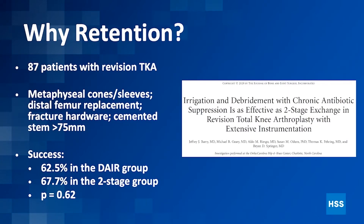So why retention? Looking at 87 patients with revision total knees — patients that already had revision total knees with large stems, large cones, and a lot of hardware — you have options: you can IND it or take everything out. Doing a big tibial tubercle osteotomy and taking these things out can be very detrimental to the bone. You may not have any bone left. Out of North Carolina, 62% were successful in their DARE group and 67% in the two-stage group. So it's a bad problem regardless of what you do, but if you can make a bad problem a little bit less bad by just doing the DARE, that may be something to consider.